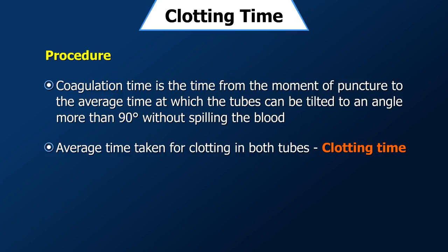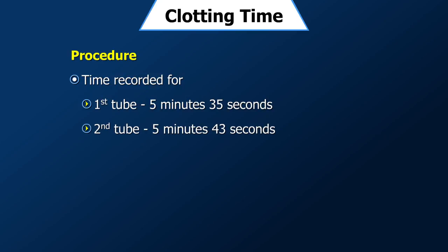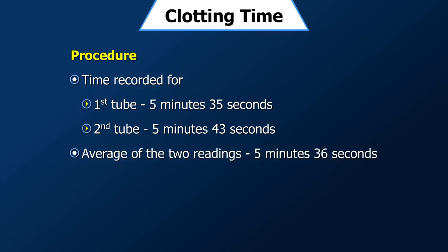For this demonstration, the time recorded for the first tube is 5 minutes 35 seconds and for the second tube is 5 minutes 43 seconds. Therefore, the clotting time would be the average of the two readings. Normal values of clotting time range between 2 minutes to 7 minutes.